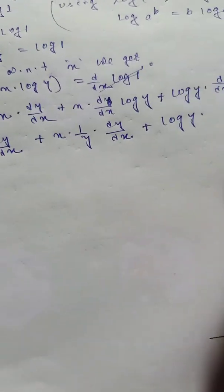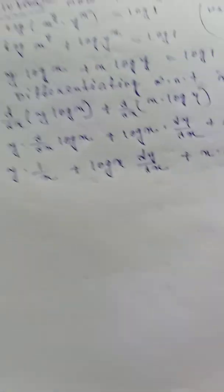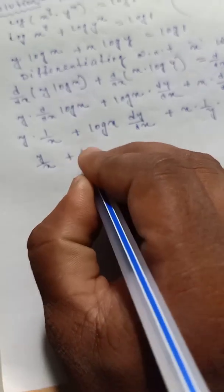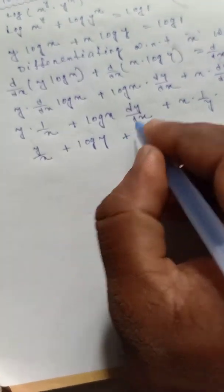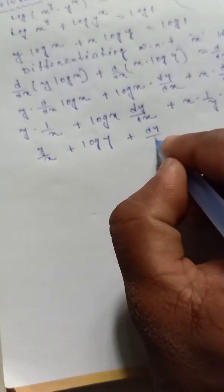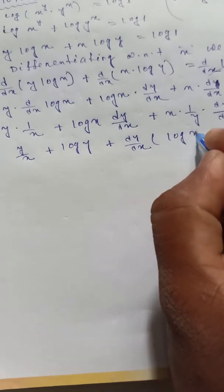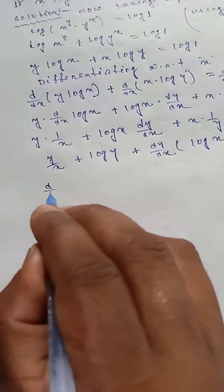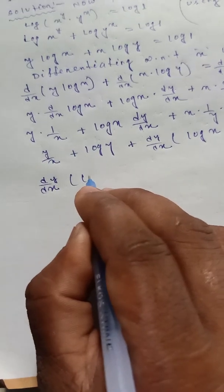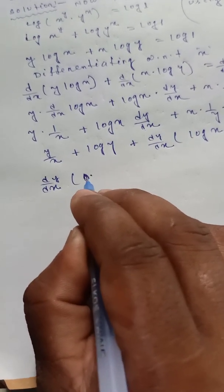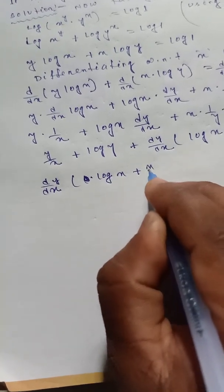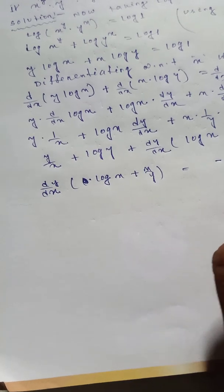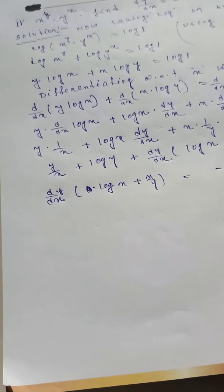So we get y/x plus log x·dy/dx plus x/y·dy/dx plus log y equals 0. Taking dy/dx common: dy/dx times (log x plus x/y) equals minus (y/x plus log y). Therefore dy/dx times (log x plus x/y) equals minus(y/x plus log y).